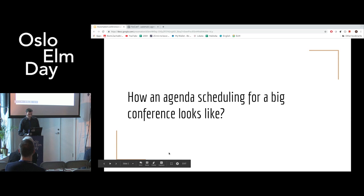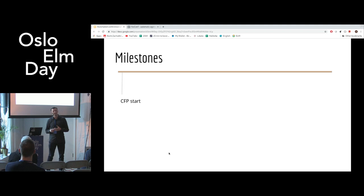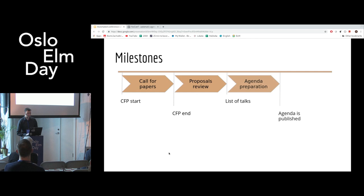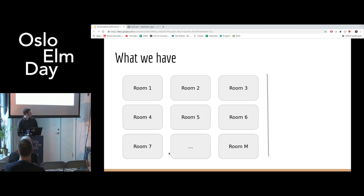Let's start with the problem. To understand better how agenda preparing looks, let's go through some milestones which are essential for agenda scheduling. Let's say that we already had our call for papers campaign. We get a lot of proposals, and our committee did a great job walking through those proposals, accepting, sometimes rejecting some of them. Finally, we have a list of talks that we want to schedule, and agenda stays the same until the start of the conference.